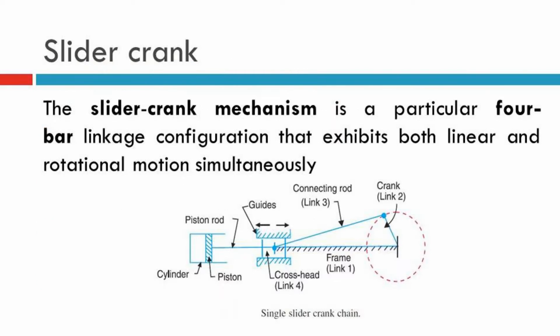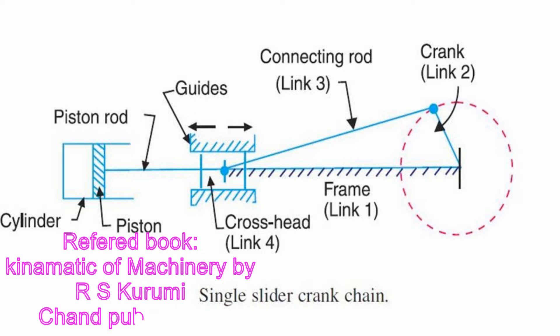Let's see our slider crank mechanism. It is a 4-bar chain that exhibits both linear and rotational movement simultaneously. It contains a crank, connecting rod, a piston, and some guideways. This slider crank mechanism is used in our engines.